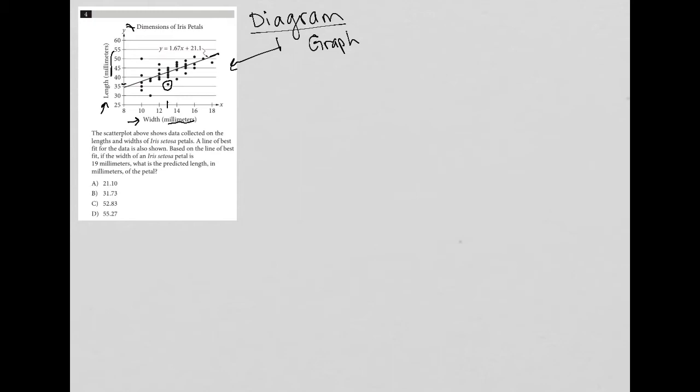The next sentence says based on the line of best fit, if the width of an iris setosa petal is 19 millimeters. So now we're getting into some real information here. So I'm going to just write it down for right now. So width equals 19. What is the predicted length in millimeters of the petal? So the length is the question mark.